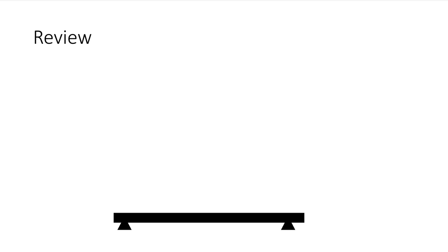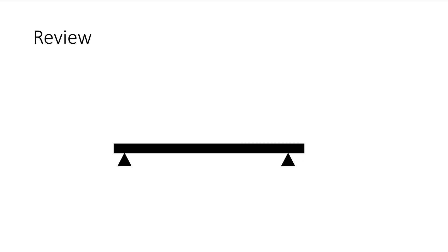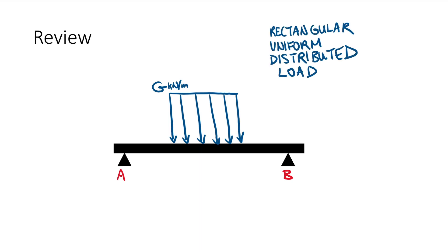For some quick review, here we have a very simple beam with a couple points, let's just say A and B, and we have this distributed load which we'll label G and throw some units on there. This is a rectangular uniform distributed load.